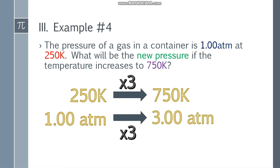If you doubt this, 1 over 250 equals x over 750. So 750 times 1 equals 750, equals 250x. Divide both sides by 250 and x equals 3. So the answer is 3 atm.